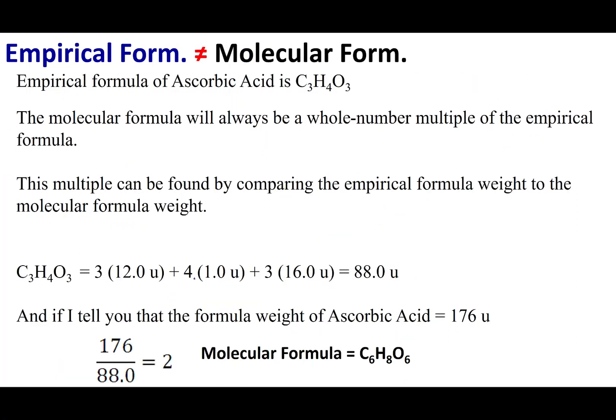The empirical formula is different from the molecular formula. The empirical formula is the lowest ratio in my compound. The molecular formula tells you exactly how many carbons, hydrogens, and oxygens are present. So this could be C₃H₄O₃, or double that — C₆H₈O₆ — or triple — C₉H₁₂O₉ — and so on. To solve this, I need one more piece of information, so I go back into the lab and do one more experiment to find the formula weight — the molar mass of ascorbic acid. That experiment tells me ascorbic acid is 176 atomic mass units.